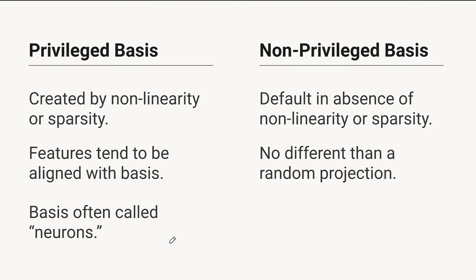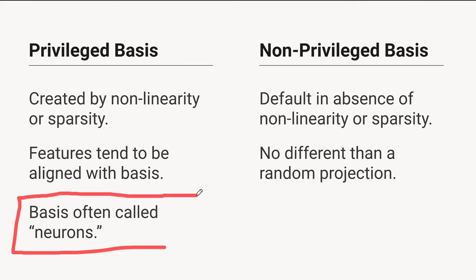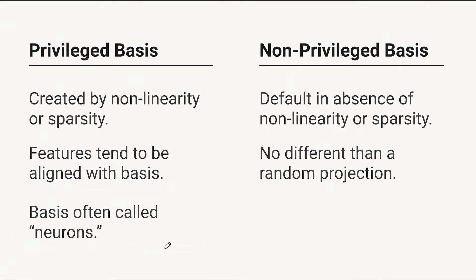So when we have that kind of privileged basis that encourages features to align, we'll call the basis dimensions neurons. But usually I won't call them neurons if they don't have that. For instance, if you have a word embedding where you don't have a privileged basis, I usually don't think of the basis dimensions there as being neurons.